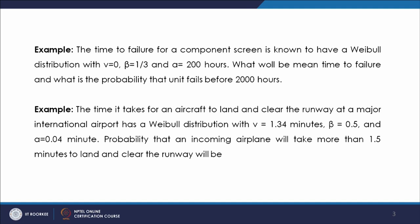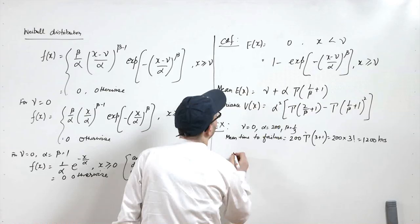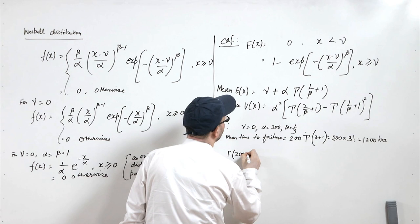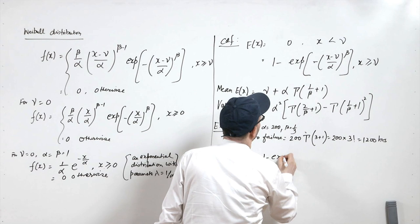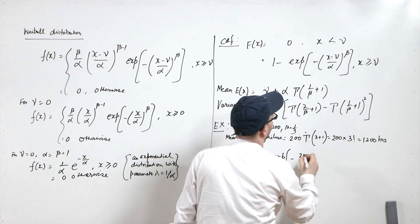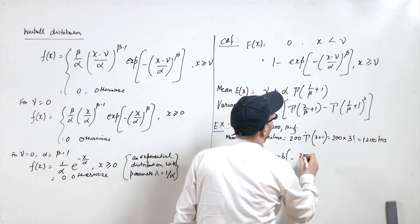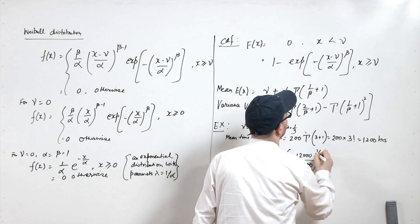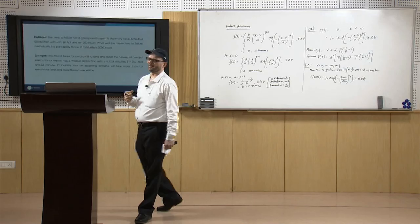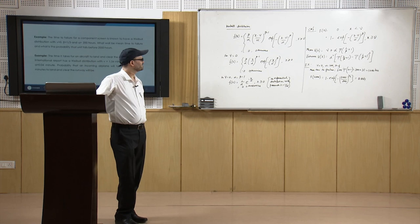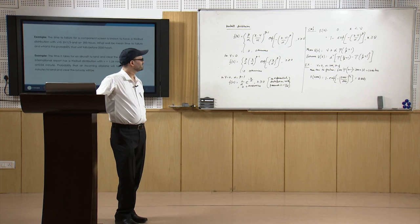The probability that the unit fails before 2000 hours is found using the CDF: F(2000) = 1 - exp(-((2000 - 0)/200)^(1/3)) = 1 - exp(-(10)^(1/3)), which comes out to be approximately 0.884. This is how probability values are calculated for Weibull distributed events.